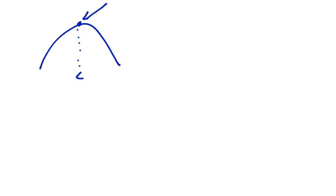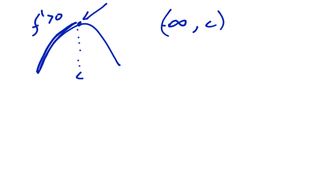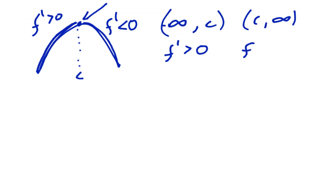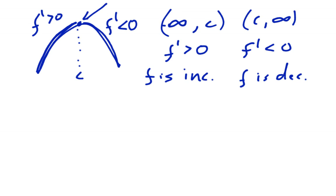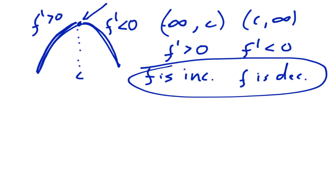Here's a brief introduction as to why the first derivative test works. Let's say we have a relative maximum at x equals c. Notice that from negative infinity to c the function is increasing, which means f prime is greater than zero — f prime is positive. On the interval from c to positive infinity, the function is decreasing, which means f prime is less than zero. So f is increasing up to c and then decreasing away from c. At a relative maximum, f is increasing and then changes to decreasing.